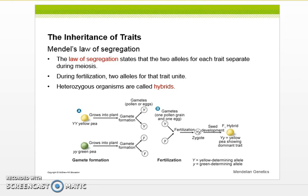So during fertilization, two alleles for that trait unite, one from a sperm, one from an egg. And heterozygous organisms are called hybrids.